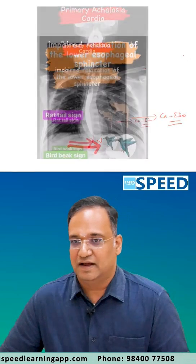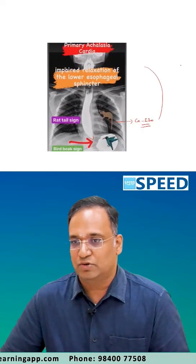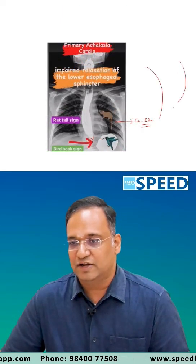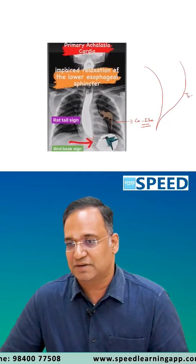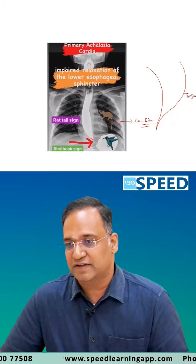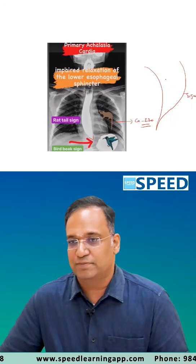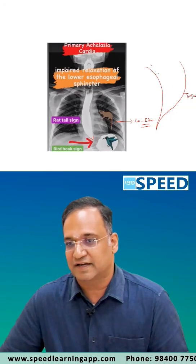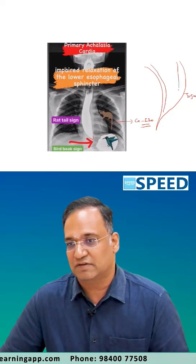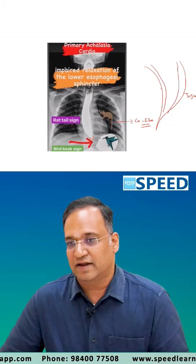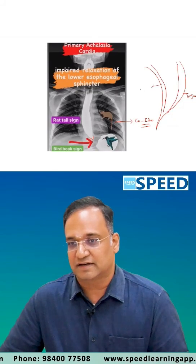In Achalasia cardia, you will also have a dilated esophagus, called a sigmoid-shaped dilated esophagus. It could also show a double track sign or tram track sign, due to a thickened esophageal wall.